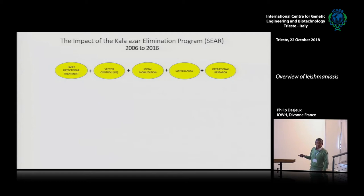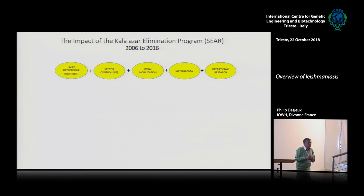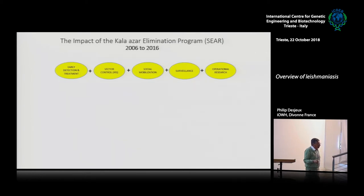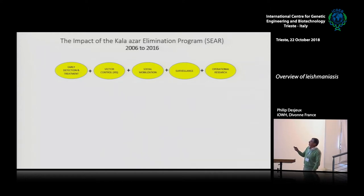For my colleague Greg, the different components of the Kala-azar Elimination Programme include research. But of course it's a package that has to be very global. If you want to succeed, you cannot separate the detection of cases with a good test, the treatment, and the vector control. You need all these activities: social mobilization, surveillance, pharmacovigilance. Greg will tell us how this has been improved in the context of the Kala-azar Elimination Programme.